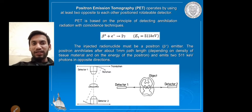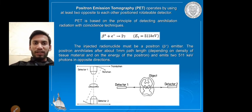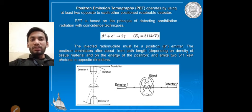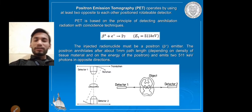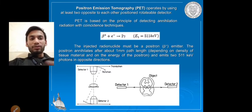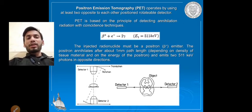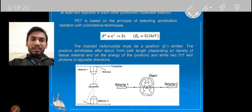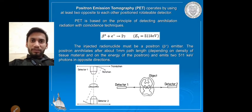When a radioactive positron annihilator is inserted, it releases a radionuclide that emits positrons moving in opposite directions. Two detectors are placed opposite each other around the body, moving continuously, always positioned 180 degrees apart from each other relative to the object. These two detectors detect the photons.